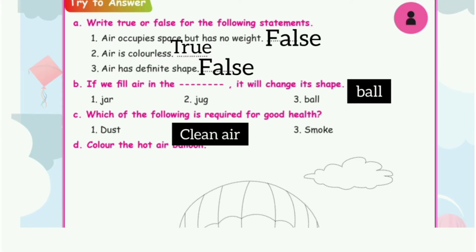Then take page number 94. True or False for the following statements. First one: air occupies space but has no weight. The answer is False. Second one: air is colorless. The answer is True.